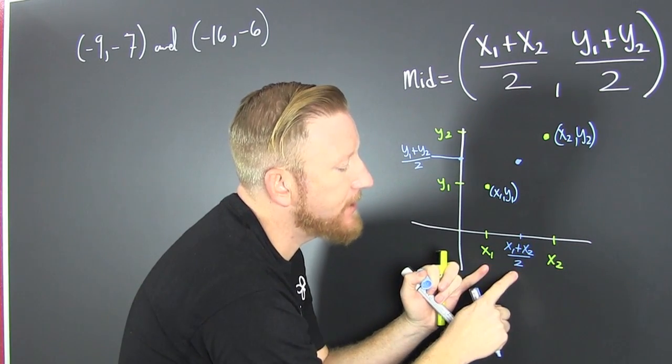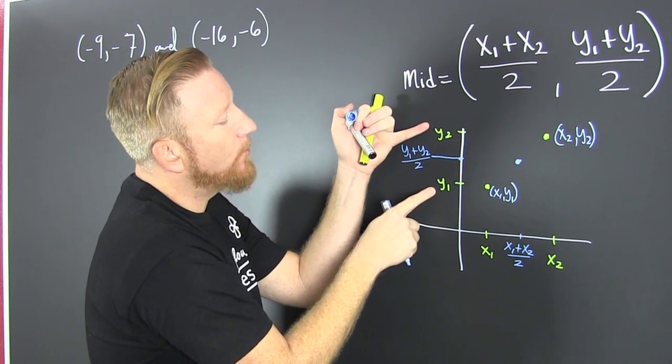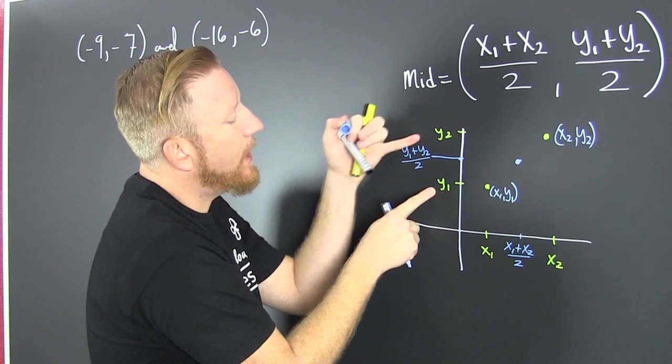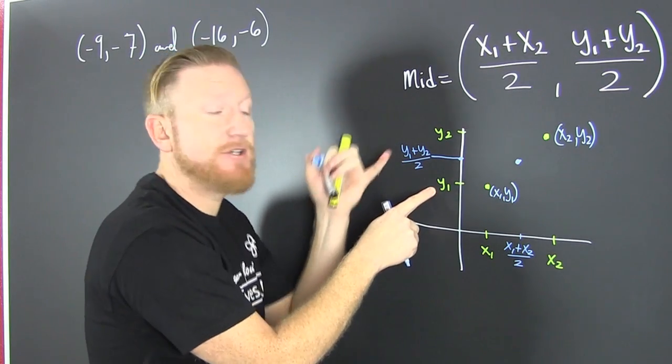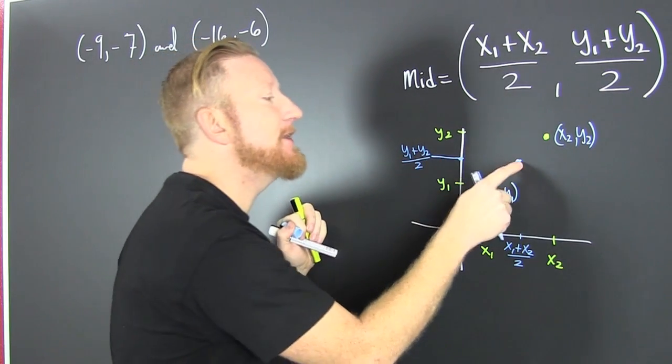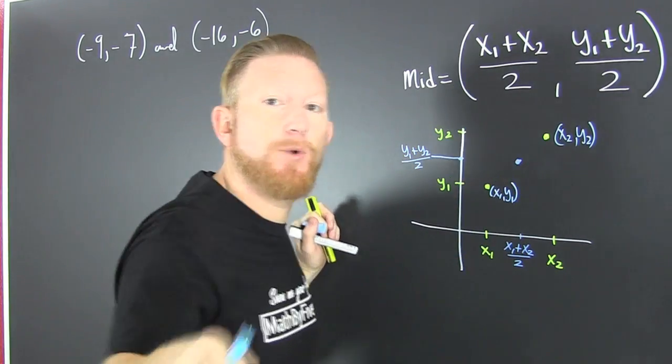It's going to be the average of the x's. x1 plus x2 divided by 2, and it's going to be the average of the y's. y1 plus y2 divided by 2. The average is going to meet you halfway, and that's how we're going to get that point right there. Halfway.